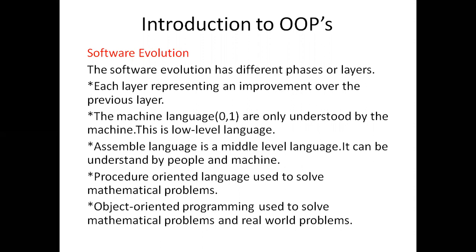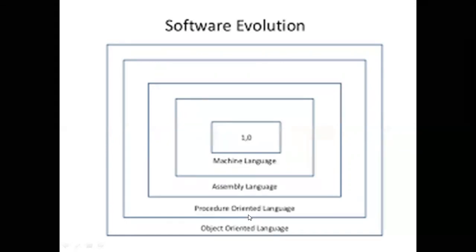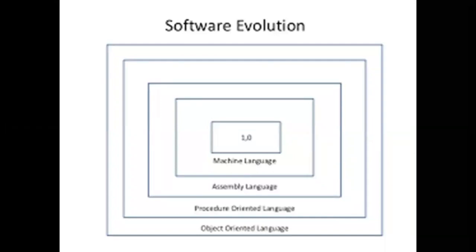Anyone have any doubt about this software evolution? You can note down this figure: first we have machine language working on binary numbers zero or one, later came assembly language, after that procedure-oriented language, and finally object-oriented language. These are the layers available in software evolution.